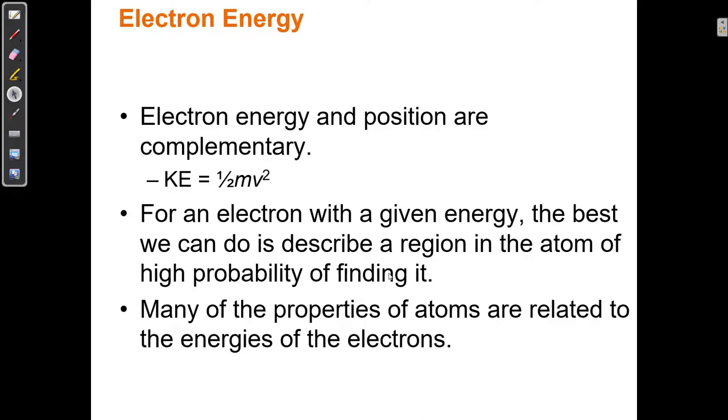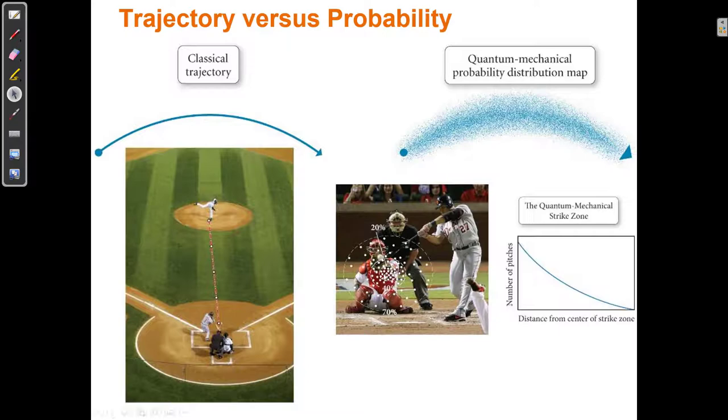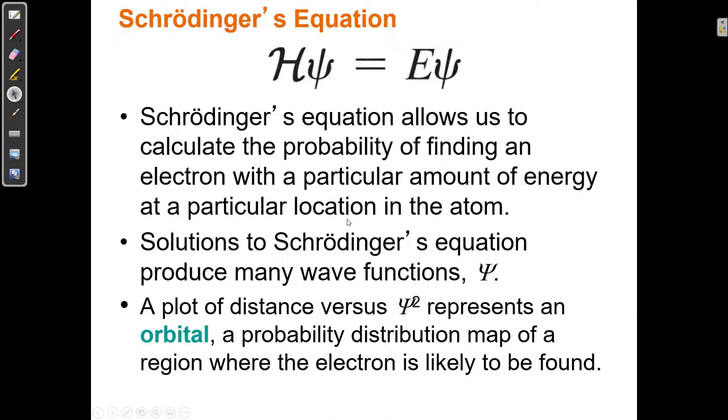So we've seen before that the energy of an electron, the kinetic energy can be measured as one half of the mass times the velocity squared. So electron energy and position are also complementary. Position and velocity are complementary, and energy and position are also complementary. So for an electron with a given energy, the best we can do is describe a region in the atom that has a high probability of finding it. So like in the catcher's mitt, is it 20%, 40%, 70%, 95%? It's within this region somewhere. There's a 95% certainty that it's somewhere in here. It's the best we can do with an electron.